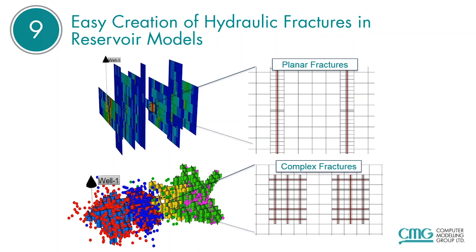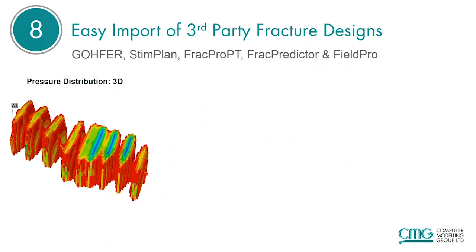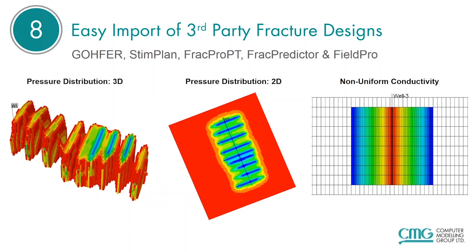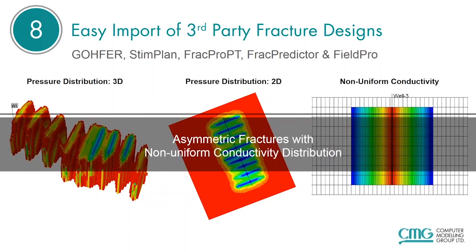A third way of implementing fractures within CMG brings us to the number eight reason: easy import of third-party fracture designs. CMG has an import format implemented to exchange data between Gopher, Stimplan, FracPro PT, FracPredictor, and FieldPro. There's nothing limiting other third-party tools from copying this format for export to CMG. These are asymmetric fractures with non-uniform conductivity distribution, done in a fracture modeling package outside of CMG and simply brought in with this method.